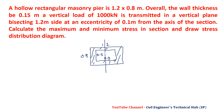The load is applied at an eccentricity of 0.1 meter. The bisecting plane is along the 1.2 meter depth, so depth d becomes 1.2 meters and width b becomes 0.8 meters. From these values we can calculate the maximum and minimum stresses.